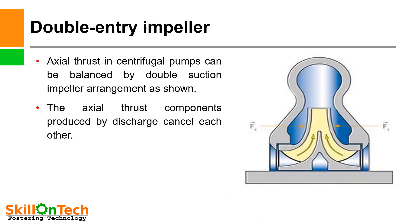Double entry impeller: You can see a picture of a pump impeller where the entry of suction is from both sides of the pump — from both directions. The pressure of the impeller shrouds on both sides will remain the same, so axial thrust components produced by discharge cancel each other and axial thrust is nullified. Double entry impellers are therefore a suitable measure to balance axial thrust in centrifugal pumps.